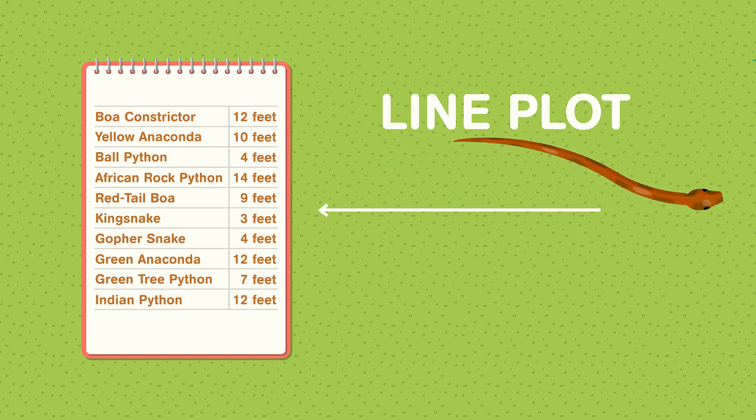To create a line plot, he draws a number line where the horizontal scale is the length of the snakes in feet. Using the data from the chart, he draws an X to represent each snake above its measurement.